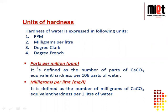Parts per million, that is ppm, is defined as the number of parts of calcium carbonate equivalent hardness per 10 to the power 6 parts of water. It means hardness is expressed in terms of calcium carbonate equivalent per 10 to the power 6 parts of water.